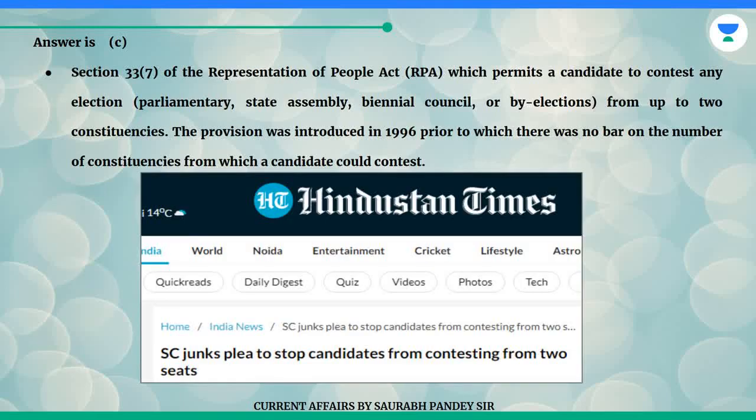Answer is C. Section 33.7 of the Representation of People Act (RPA) permits a candidate to contest any election — parliamentary, state assembly, biennial council or by-elections — from up to two constituencies. The provision was introduced in 1996, prior to which there was no bar on the number of constituencies from which a candidate could contest.